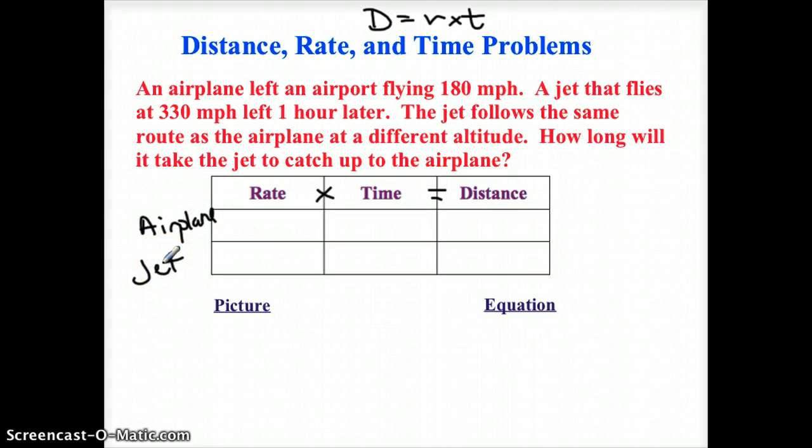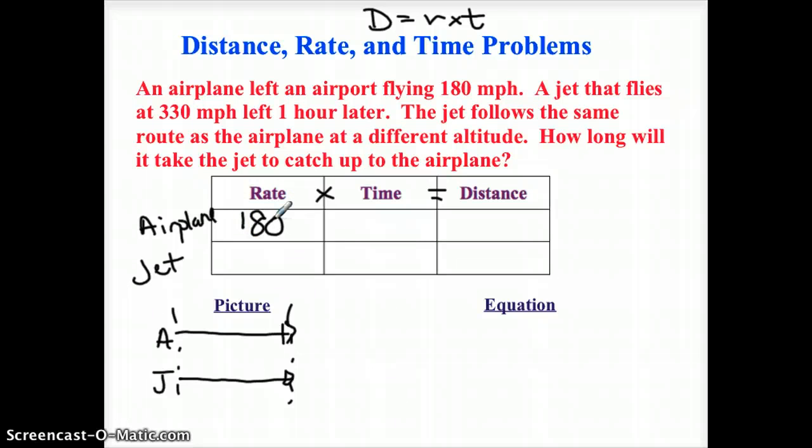So I cannot draw an airplane, so I'm just going to call this A for my picture. Here it goes, it's flying 180 miles per hour. And then the jet, here it is. It leaves later, but what you want at a different altitude, you're trying to get it to catch up to the airplane. So look at this. You want them to have gone the same distance. That's going to be key. So let's think about that in this context. So an airplane left an airport flying 180 miles per hour. We know that's its rate. That's the easiest part of the table to figure out. A jet that flies at 330 miles per hour, it leaves one hour later. So we know their rate's 330.